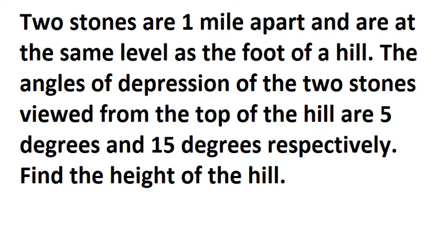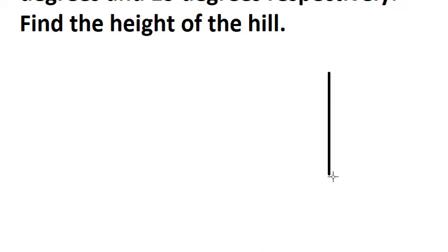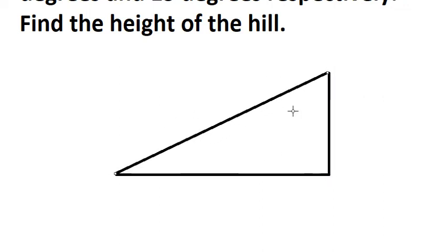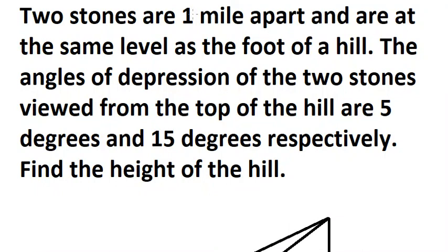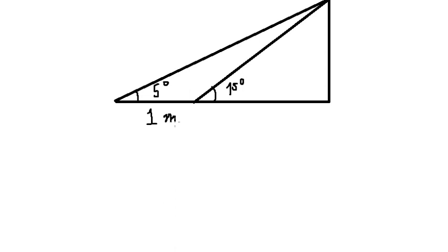Now I will show you how to answer. First, we need to draw the diagram. So we have two stones at the foot of the hill. We know that this angle is about 15 degrees, and this angle is about 5 degrees. They are one mile apart, so I will write 1 mile.